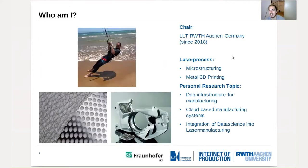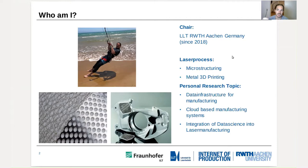About me, I'm Moritz Krueger. I'm a scientist for the chair for laser technology in Aachen, Germany. I'm focusing in my research work especially on microstructuring and metal CDD printing. My personal research topics are data infrastructure for manufacturing, cloud-based manufacturing systems, and integration of data science into laser manufacturing — especially regarding the IT infrastructure behind current manufacturing systems and beyond. And normally, if I'm not doing some cloud-based laser manufacturing stuff, I'm going kite surfing somewhere in the Netherlands, or as you can see here on Sicily. But if you know any other good spots in Europe, please let me know.